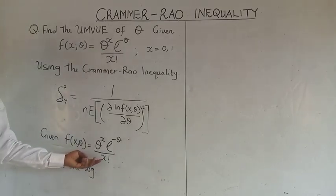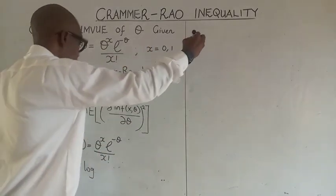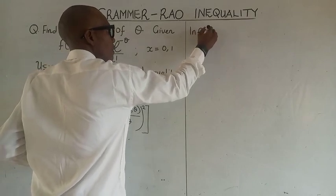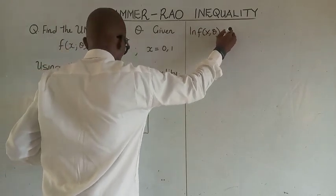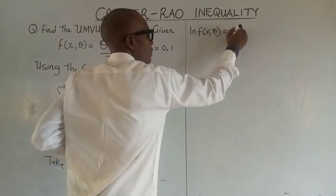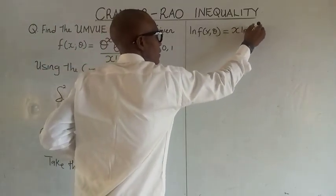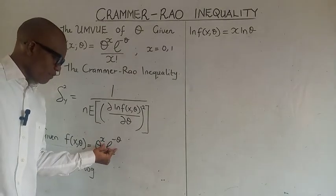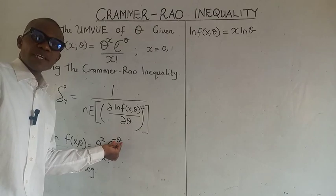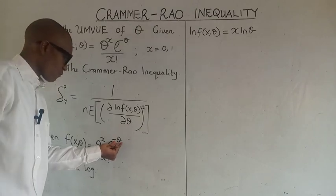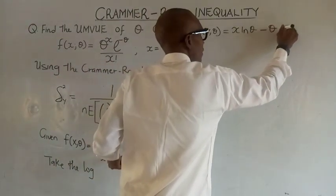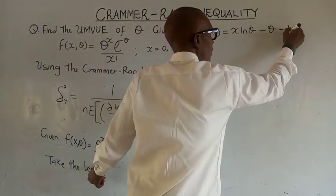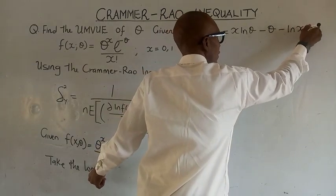Once we take the log all the way, we'll go over to this side. We'll take the log of this, which will give us x minus zeta. If you take the log of an exponential function, you'll get that same exponent while the exponential goes off. So we'll get minus zeta and minus log x factorial.